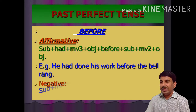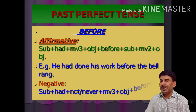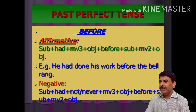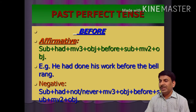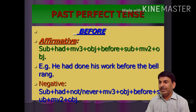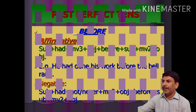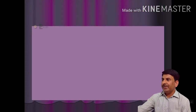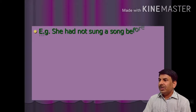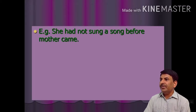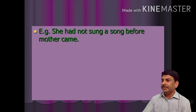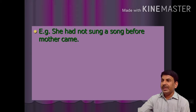In negative sentences, the structure is: subject + had + not/never + third form of the main verb (also known as past participle) + object + before + subject + second form of the main verb + object. The example is: 'She had not sung a song before mother came.' The first clause belongs to past perfect tense and the second clause belongs to simple past tense.